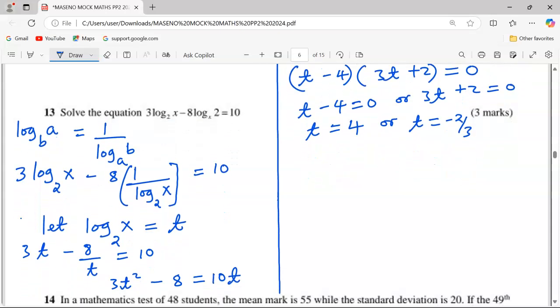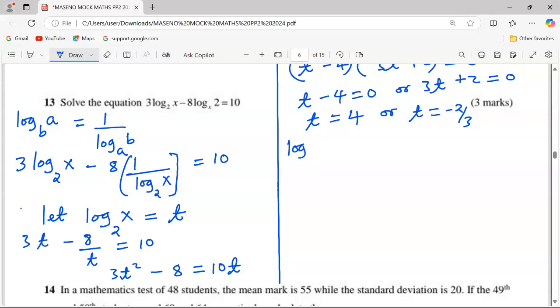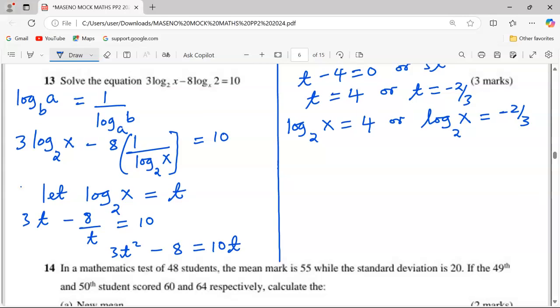And remember what we had let t be is log₂(x). So this can either be 4, or log₂(x) can be -2/3. With these two possibilities, we can now change logarithm equations to index notation, whereby we say, generally, log_a(b) = c means that a^c = b.